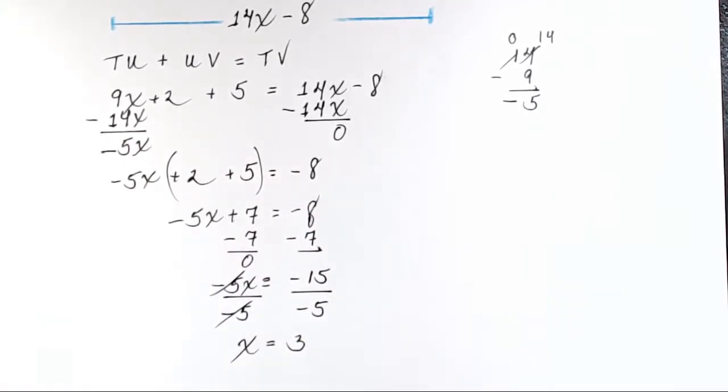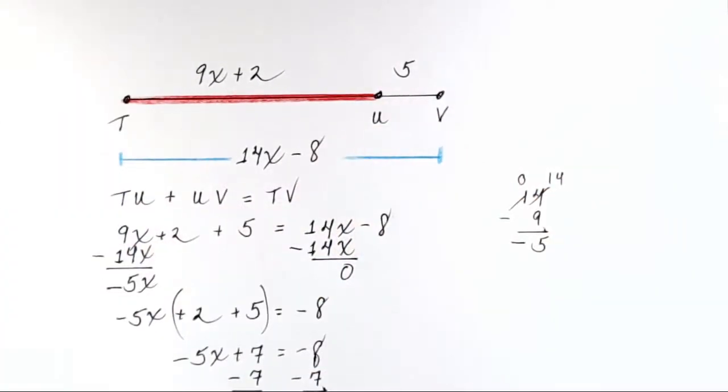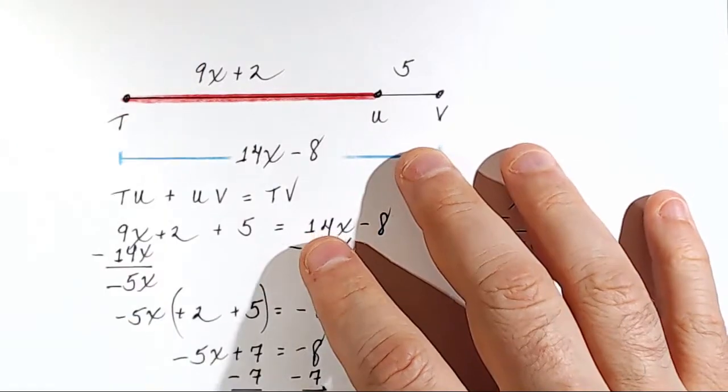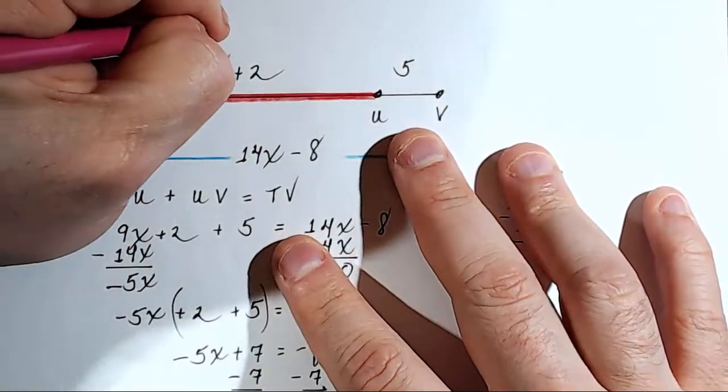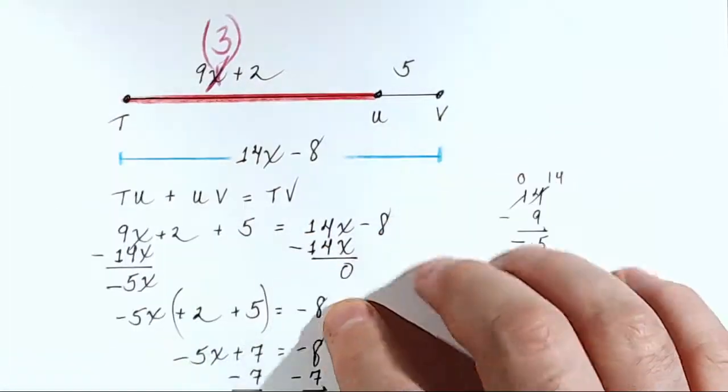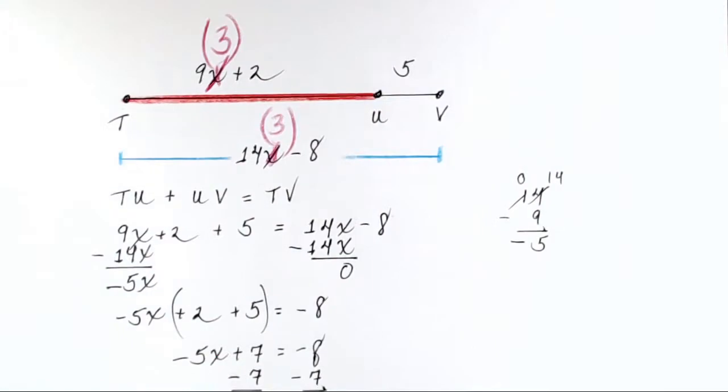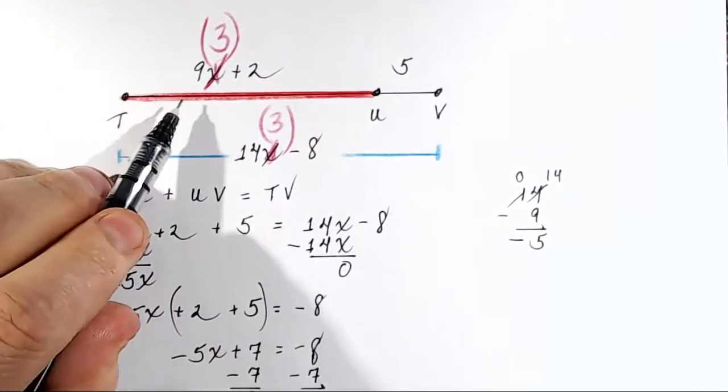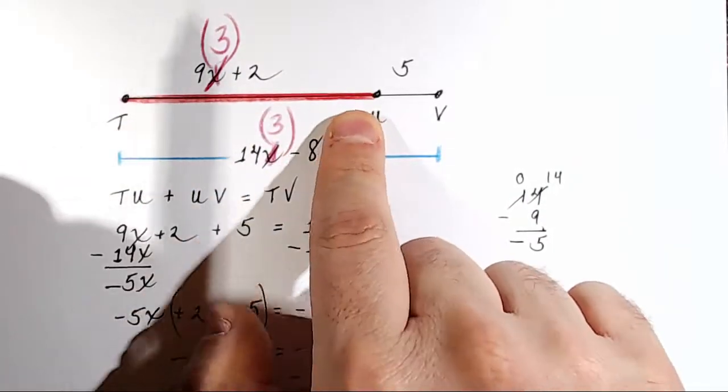That's what we think x is equal to. But that's not what the problem asked. People, remember, we've got to find the red distance. So we think x is 3. That means I should be able to go in and replace every x with a 3. I'll do it here and I'll do it here. So let's do this now.